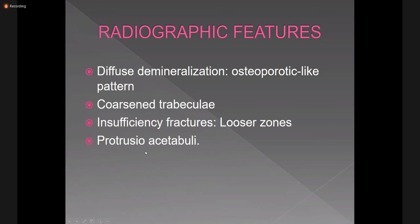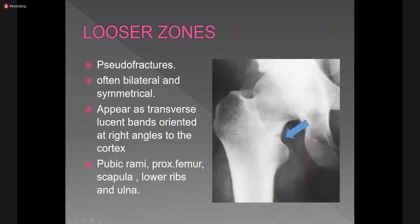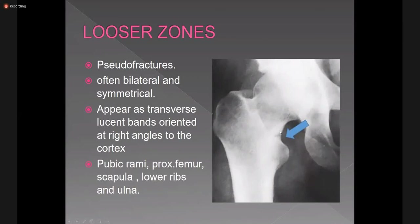Looser zones are also called pseudo-fractures. They are incomplete fractures perpendicular to the axis of the tubular bone, seen at the concave side. The most common locations are the pubic rami, proximal femur, scapula, and lower ribs. Their margins are sclerotic — increased bone density — on radiology.